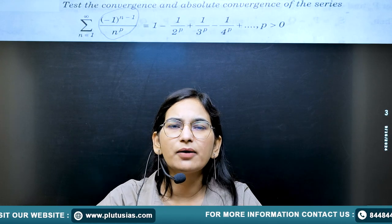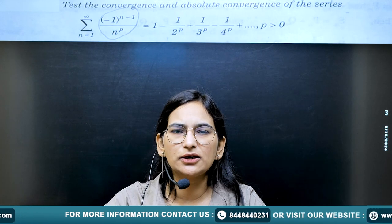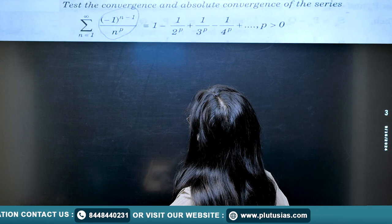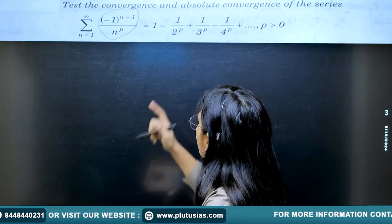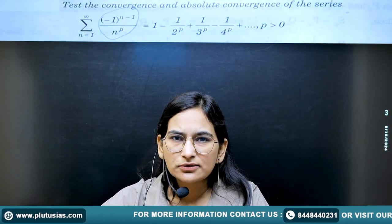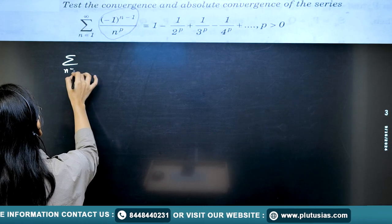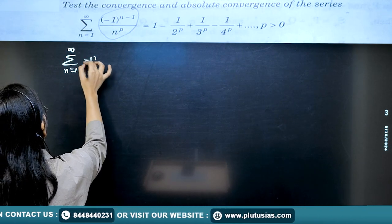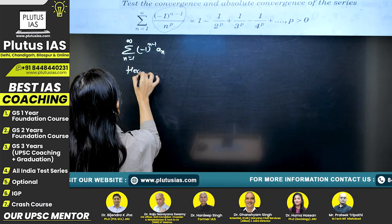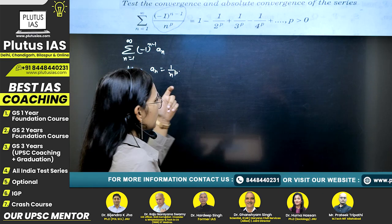This is a question that has appeared in the UPSC exam as well, so this is a theme that keeps repeating in UPSC, and that is why I have selected it. The question asks to test the convergence as well as absolute convergence of the given series. Is it an alternating series? Yes, it is. We can write it as summation from n=1 to infinity of (-1)^(n-1) * a_n, where a_n = 1 / n^p.